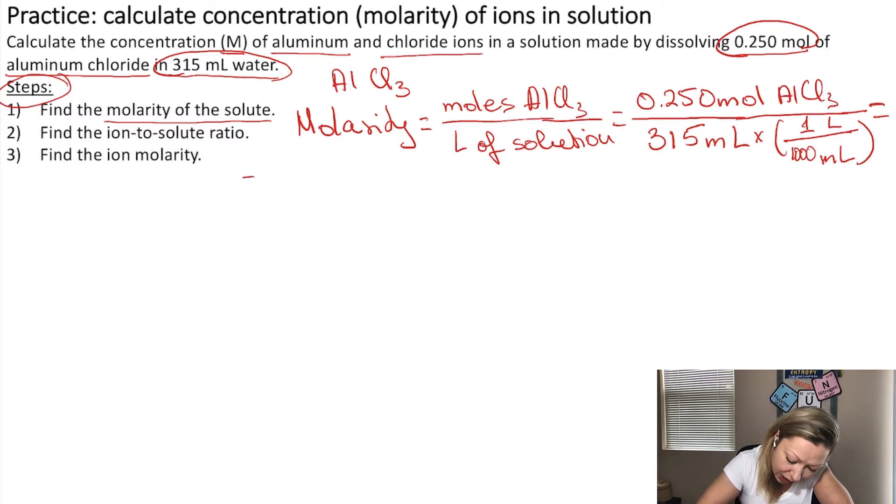So, if you do this calculation, you are going to get 0.714 mol per liters of aluminum chloride. Okay, first step is done. Now, we know what is the molarity of aluminum chloride in the solution. What is the next step?